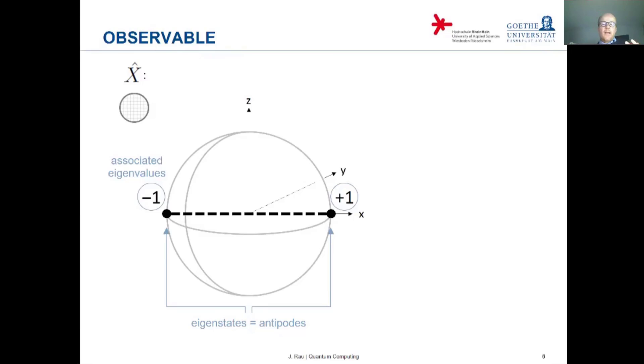So we have the plus state on the right with eigenvalue plus one and we have the minus state on the left with associated eigenvalue minus one. So you can visualize an observable and you can do that for any other observable. We did that here in the example of Pauli X but you can do that for any other observable. You will always find that the observable can be visualized as two points on the Bloch sphere which are antipodal. And then you can just write the associated eigenvalues at the two ends of this axis.